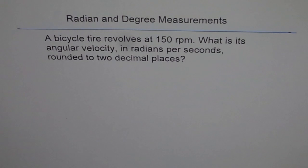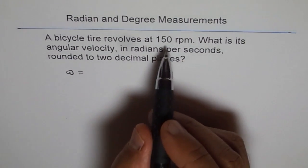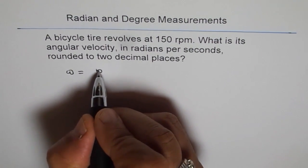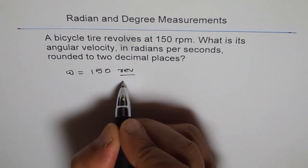Round it to two decimal places. So let's say that angular velocity is omega. Omega equals 150 is already given in revolutions per minute. So we write 150. Let me write revolutions per minute in this fashion.